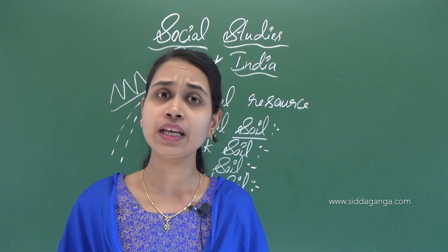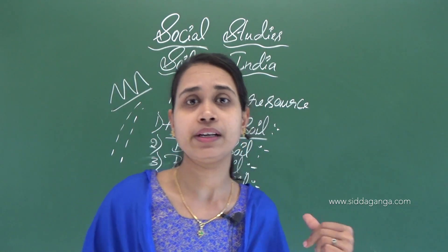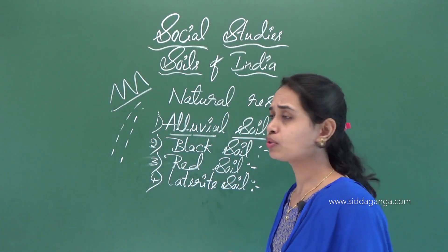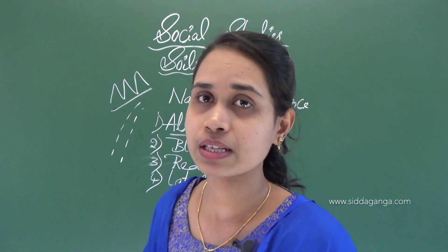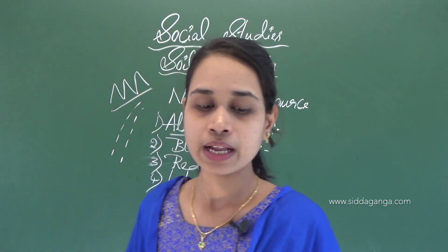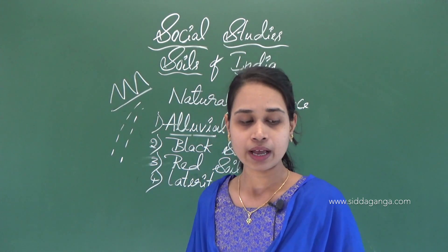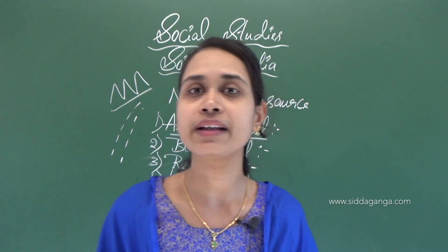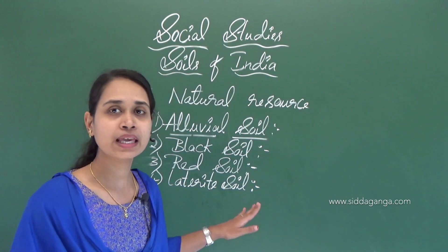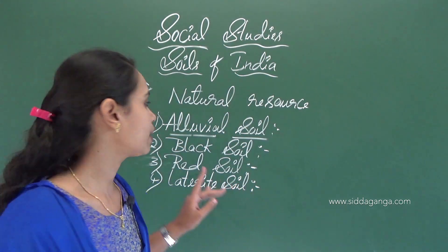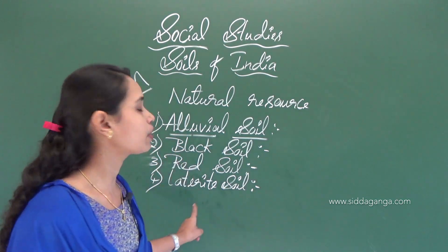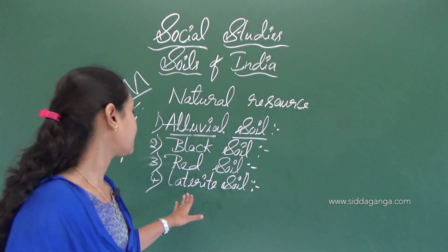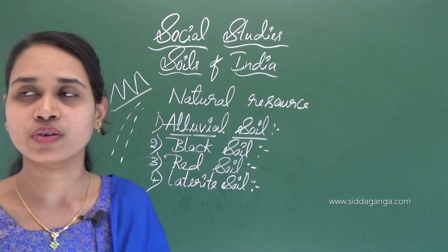Compared to alluvial soil, laterite soil is not very fertile, but by adding manure and chemical fertilizers we can make it fertile. Laterite soil is also good for growing fruits, and it is commonly used to make bricks.